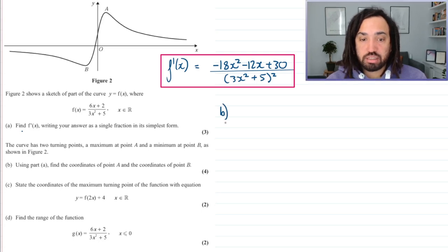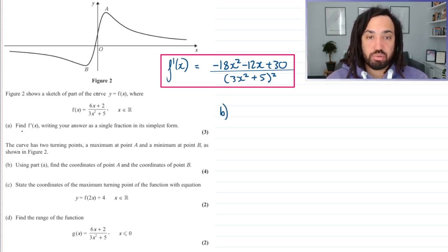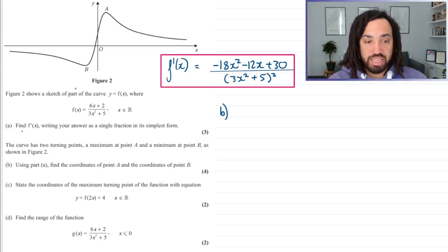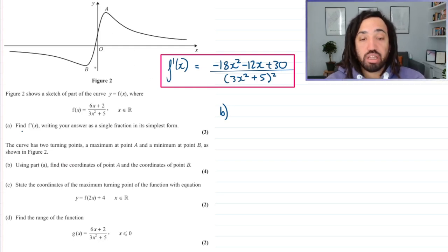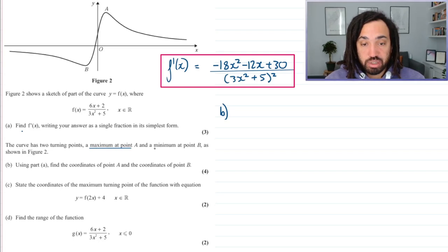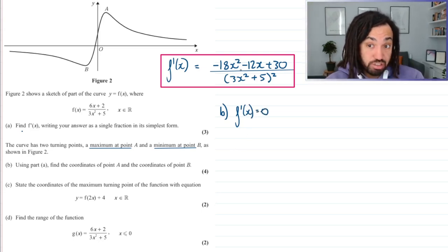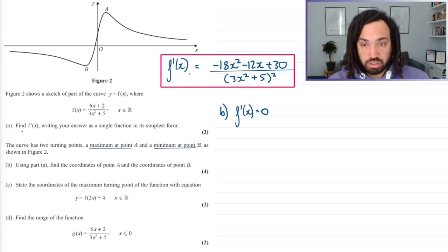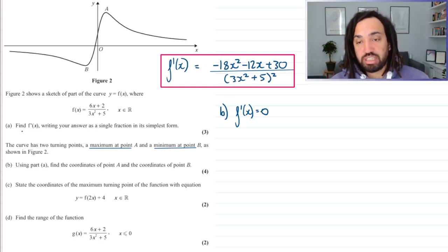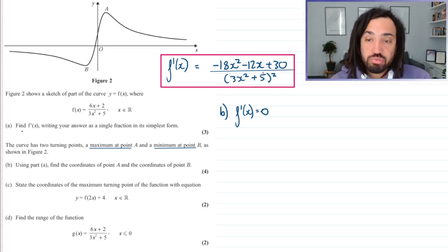Part B says there are two turning points, a maximum here at A and a minimum here at B. Using part A, find the coordinates of A and the coordinates of B. At maximum points and at minimum points, we have the derivative is equal to zero. So we can say f dash of x is equal to zero. Now, how do you make a fraction equal to zero? You only need to make the numerator equal to zero because you could multiply through by that denominator. So I'm just going to set the numerator equal to zero.